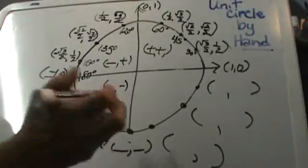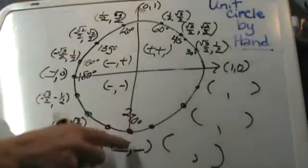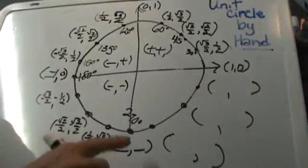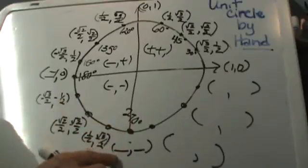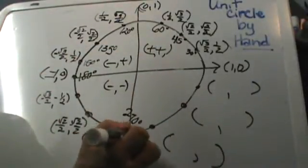Okay let's go down here to the 270 degree angle and let's label it. It's on the y axis and we said all the ones on the axis are either going to be 1 and 0 or negative 1 and 0. So this one is 0 and negative 1. So let's put that in.